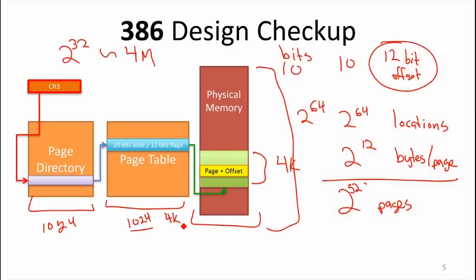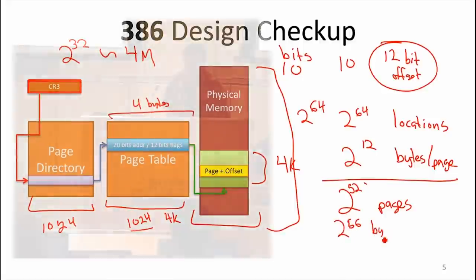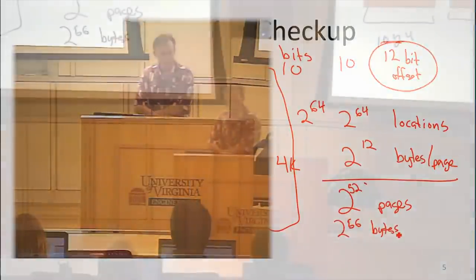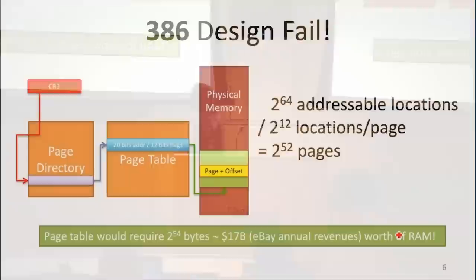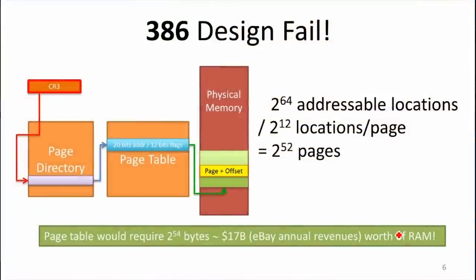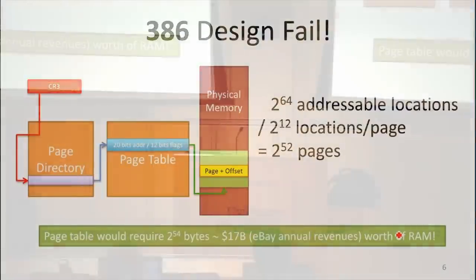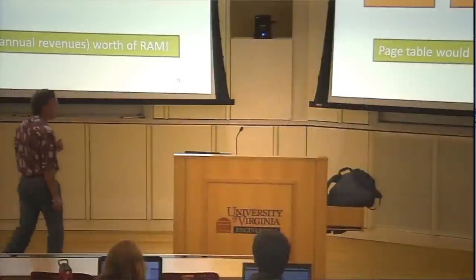Can we have 2 to the 52 pages? Our one page table, a 4K page, we could store 1,024 pointers to pages. At 1,024 entries, each entry is a pointer to a page and the flag for that page. So if we need 2 to the 52 of them, how much memory do we need just to store the page table? We need 2 to the 52 entries. Each entry is actually 4 bytes. So we would need 2 to the 56 bytes just to store the page table. And that's pretty expensive. It's ridiculously expensive. We need billions of dollars worth of memory just to store our page table.